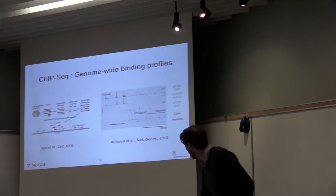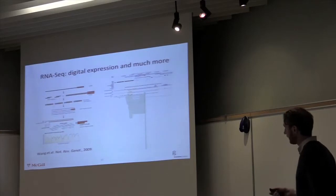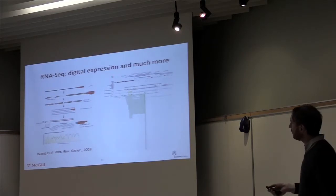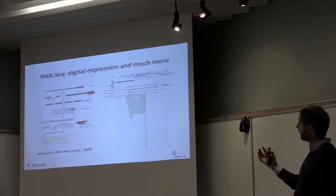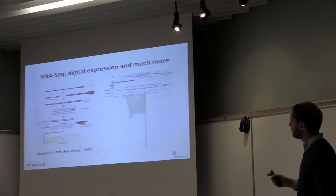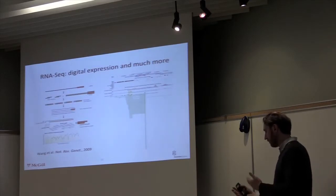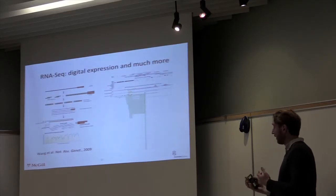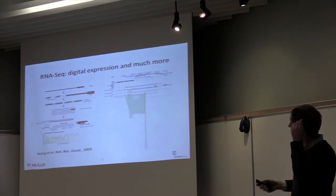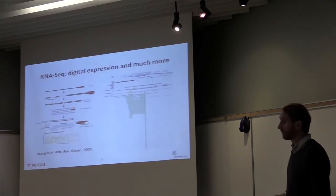Similarly, but now at the level of expression — already cheap — instead of hybridizing your library on microarrays, you convert the RNA to cDNA and just sequence all of the reads and map them back to the genome. So you get data sets about protein occupancy in the genome, and data sets about expression of various genes.